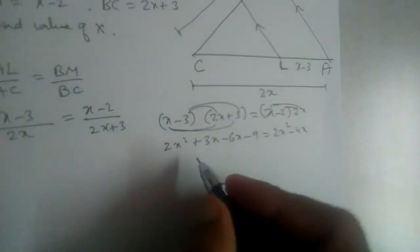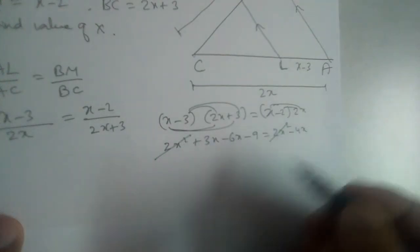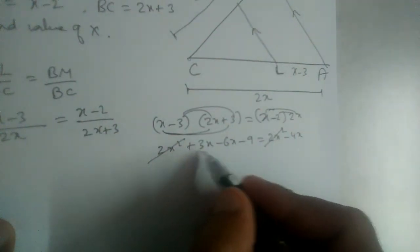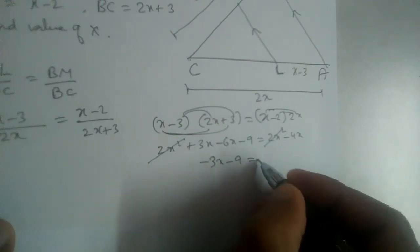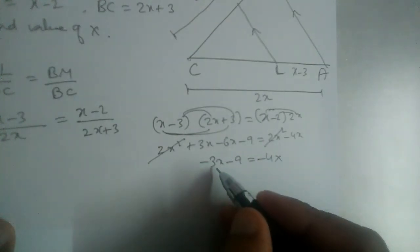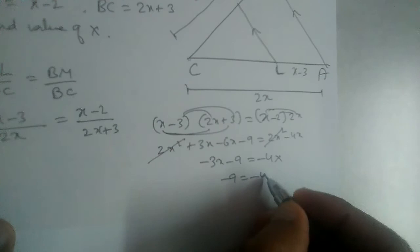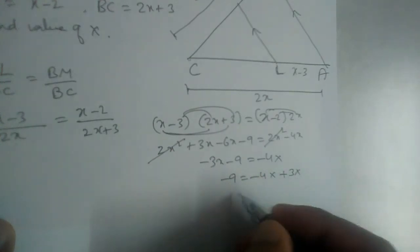Send minus 3x on the other side, it will become plus 3x. So minus 9 is equal to minus x. So 9 is equal to x.